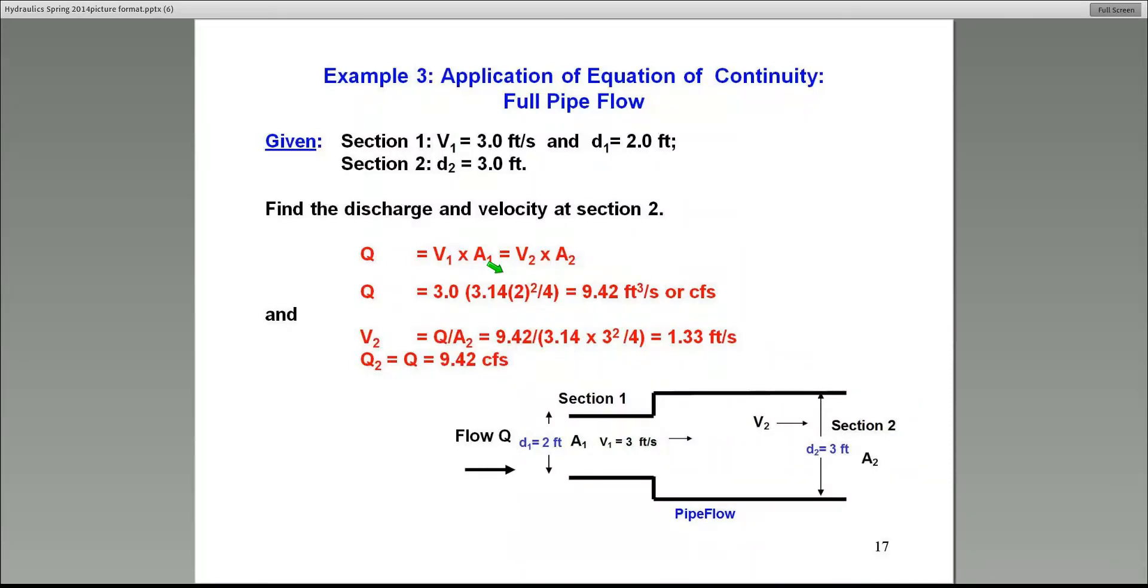Diameter at D1 typically would be 24-inch pipe. So you have to convert that to feet before you do this calculation because feet is the consistent unit. And in this case, the Q is 9.42 CFS. And using that discharge, I can then calculate the velocity at Section 2.